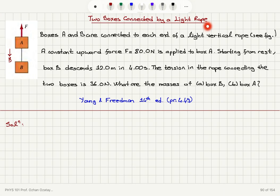Two boxes connected by a light rope. Boxes A and B are connected to each end of a light vertical rope, as you can see in the figure. A constant upward force of 80 N is applied to box A. Starting from rest, box B descends 12 m in 4 seconds. The tension in the rope connecting the two boxes is 36 N. What are the masses of box B and box A?